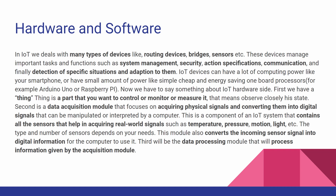The data acquisition module contains all the sensors that help in acquiring real-world signals such as temperature, pressure, motion, and light. The type and number of sensors depends on your needs. This module also converts incoming sensor signals into digital information for the computer to use. Third is the data processing module, which processes information given by the acquisition module. Fourth is the communication module, responsible for communication and data sharing with other things. IoT devices are divided into two types: wearable devices like bracelets, clocks, glasses, or even smart shorts and t-shirts, and classic devices like PCs and tablets.